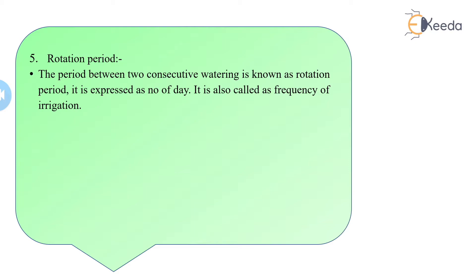The rotation period is the period between two consecutive waterings. The crop does not require a continuous supply of water; the period in between two consecutive waterings is known as the rotation period. It is also known as the frequency of irrigation.